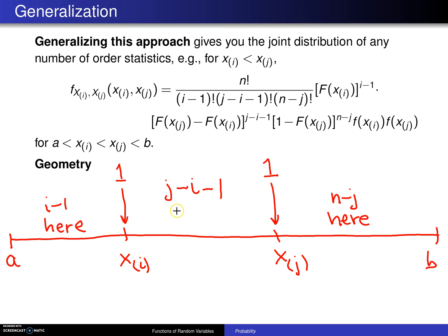Now, to see if we did the accounting right, we can add i minus 1 plus 1 plus j minus i minus 1 plus 1 plus n minus j, and when you add those five values up, you will get n. And so that has all been done properly.